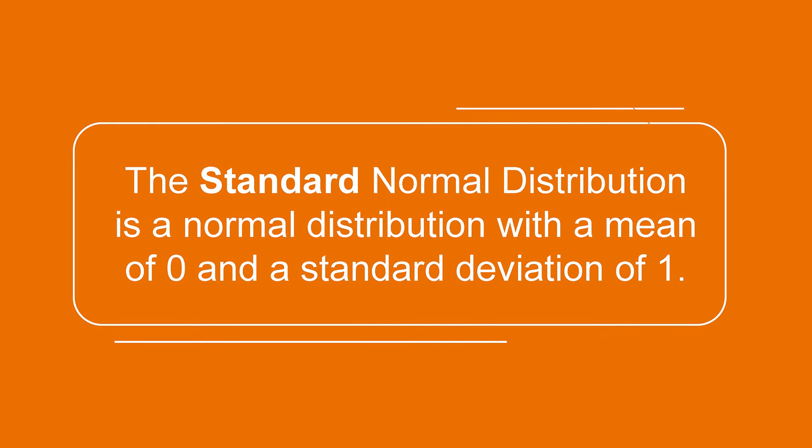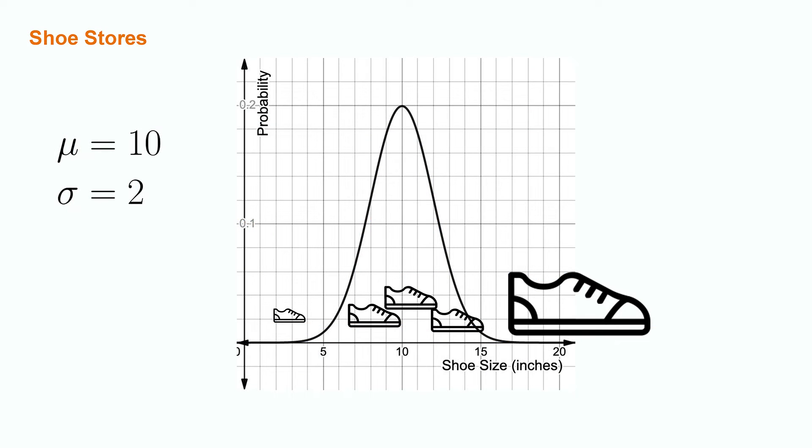It is important to emphasize that this particular distribution is referred to as the standard normal distribution when it has a mean of zero and a standard deviation of one. In other cases, a normal distribution with different parameters may also describe the random variable. In the case of shoe sizes, we can use one characterized by a mean of ten and a standard deviation of two. Notice how now the bell curve is centered at ten, and the distribution falls off towards the much bigger and much smaller shoe sizes.